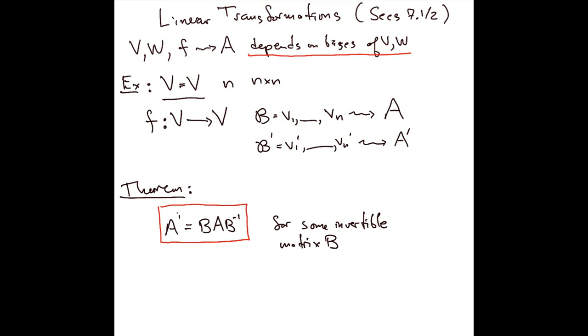And this is a very tricky statement—it's trickier than it looks. The reason it's tricky is it has two sides. On this side, this is the matrix of f with respect to the basis B', and this A here is the matrix of f with respect to the original basis B.